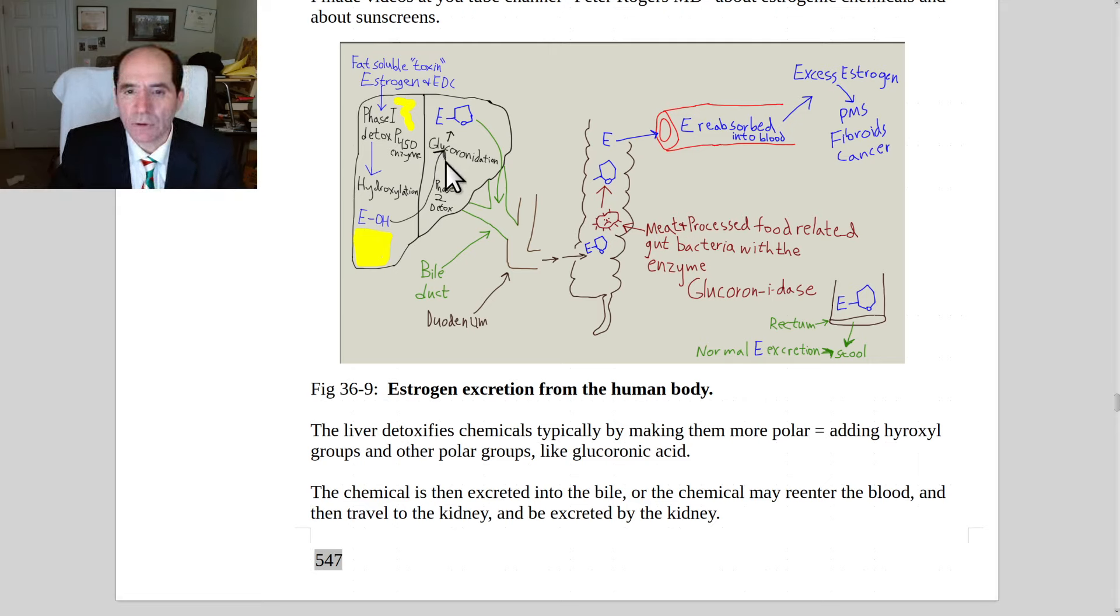In particular, it does something called glucuronidation. And think of that as being like a glucose with a carboxylic acid attached to it, and it attaches it to the E. The E here stands for estrogen. And this will be the glucuronic acid. That is then excreted by the liver into the bile, travels through the bile into the small bowel. It goes into the second part of the duodenum here, and then it travels out to the colon.